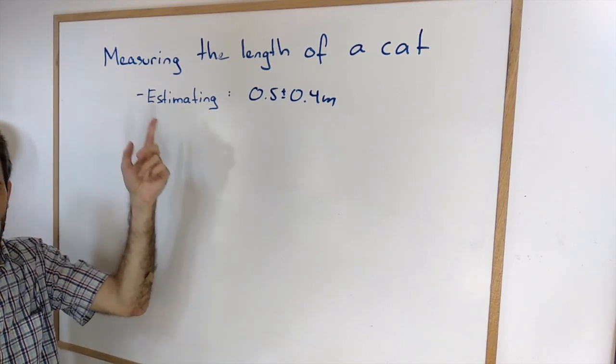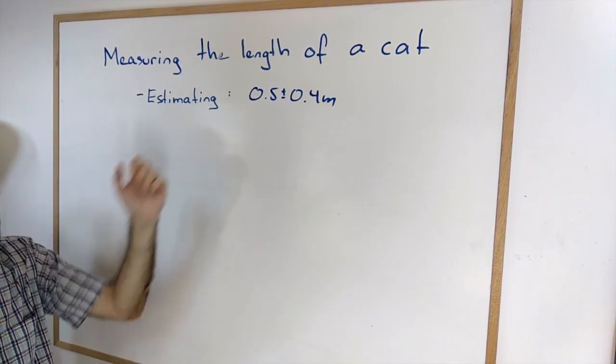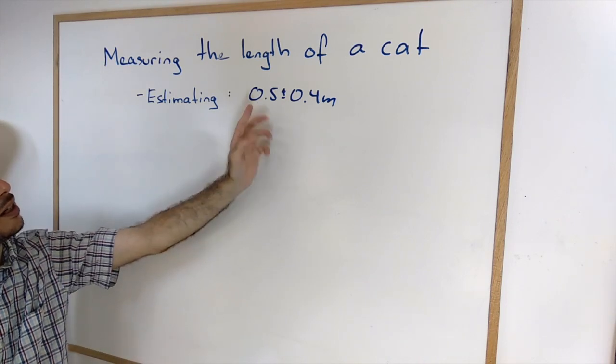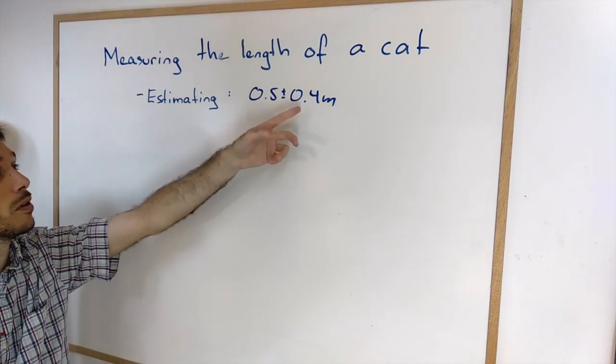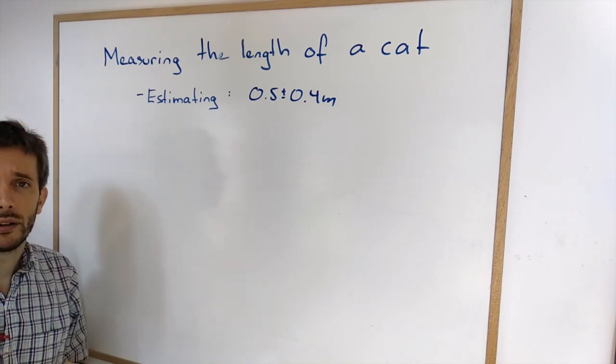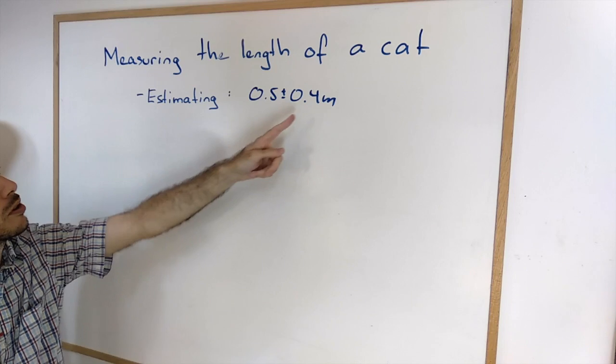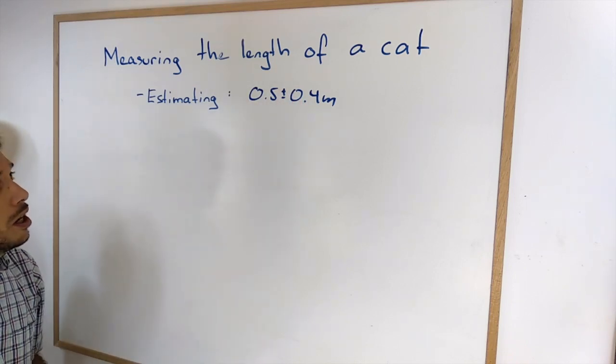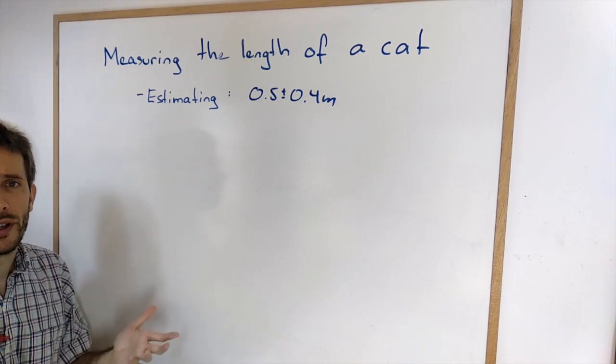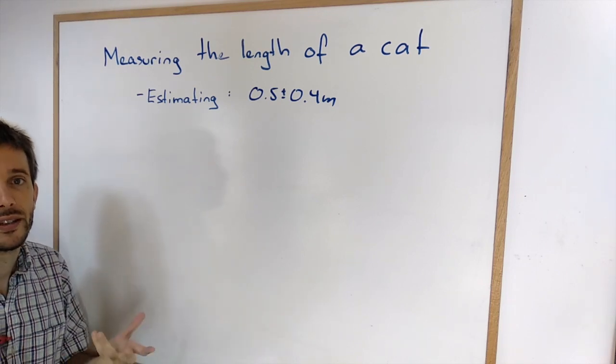In the last video, I was measuring the length of a cat and then estimated the uncertainty of my measurement. I came to an answer that the cat has a length of 0.5 meters plus minus 0.4. Now, estimating is good if you want to think about where your sources of uncertainty are, but it might not be the most comfortable thing to do because after all, it is an estimation.